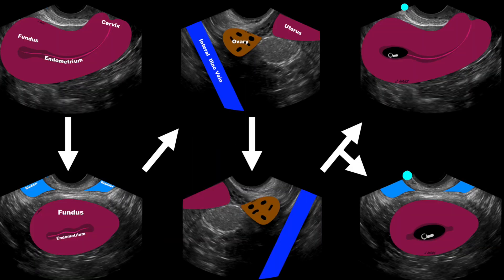In summary, on our transabdominal exam: we have no identifiable intrauterine pregnancy, no identifiable ectopic pregnancy or masses, and we do have some free fluid in the pelvis but none in the right upper quadrant. Our next step is performing a transvaginal exam. We'll have the patient urinate, perform a pelvic exam if indicated, and then continue with the transvaginal ultrasound.